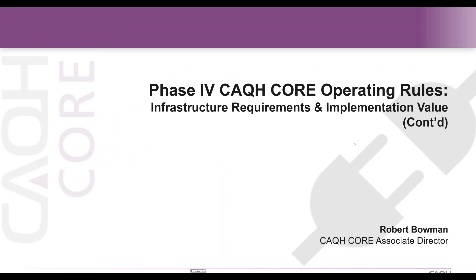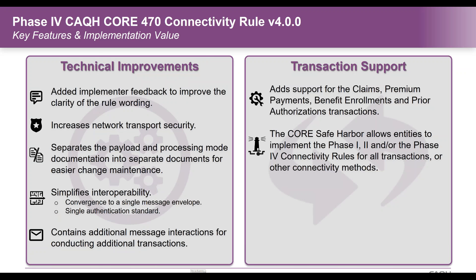We want to follow up on the infrastructure requirements and move into the requirements for the connectivity rule, which is an expansion that builds upon the requirements for Phase 2. There were specific technical improvements for the Phase 4 connectivity rule. We looked at the implementers of Phases 1 and 2, heard about the successes and challenges of implementing Phase 2, and ensured that feedback was included in Phase 4.